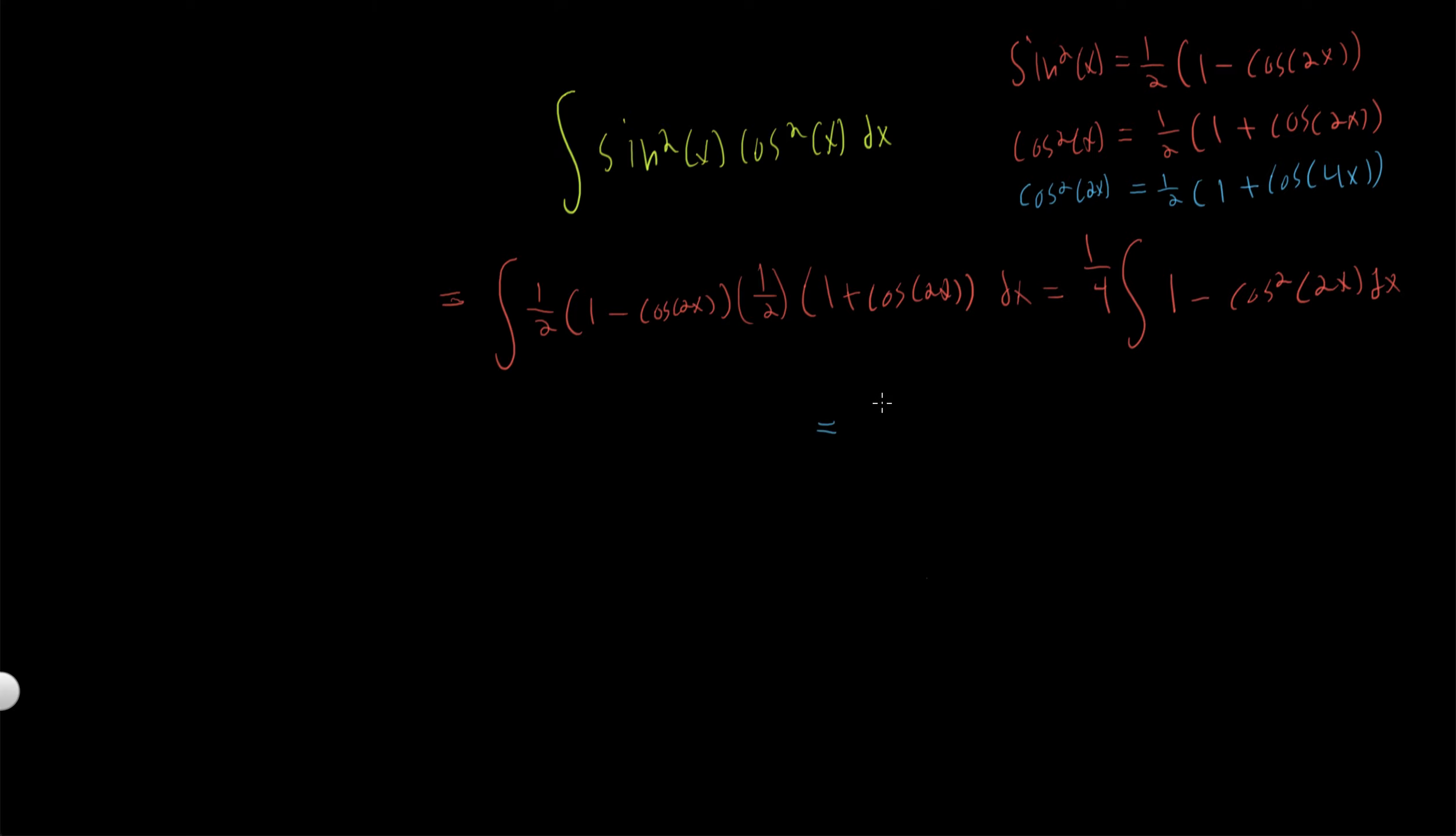Now let's substitute that. Hopefully we finish off after that. So we have one-fourth integral of one minus one-half times one plus cosine of 4x. This is looking good because now we don't have any trig functions getting squared or any powers to trig functions.